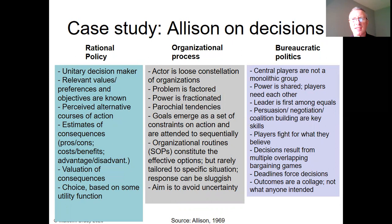He looked at it from three particular modes or lenses, as he called them. The first one is what he called rational policy, or we would tend to know it as rational choice. Essentially, it talks about a situation where much is known. You know your preferences over various outcomes, what the available outcomes are. You have some basis for making a choice — pros and cons, costs and benefits, advantages, disadvantages. You carry out some calculus to work out the different outcomes, then make a choice based on some utility function, the best outcome in your cost-benefit analysis where the net gain is greatest.